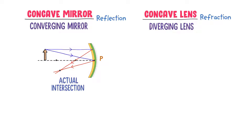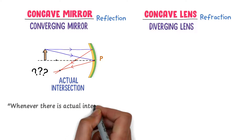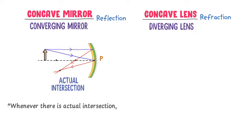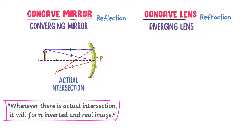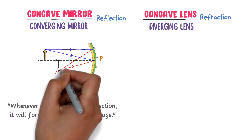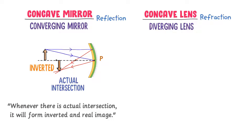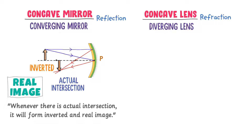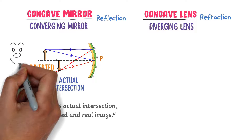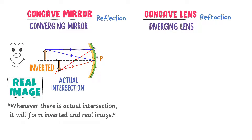Now listen carefully. What about the image of this object? Whenever there is actual intersection of reflected rays, it will form an inverted and real image. So here an inverted image is formed and this image is a real image. For example, in our daily life, the image formed by the human eye is a real image.